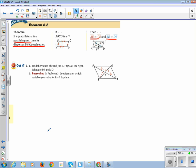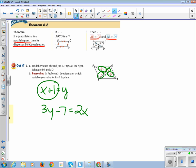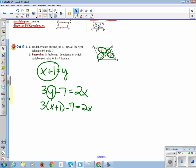Find values of X and Y in parallelogram PQRS at the right. What are PR and SQ? We know that X plus 1, this value here, is equal to Y, because the diagonals bisect each other, so it creates two equal portions. We know that 3Y minus 7 is equal to 2X. I'm going to substitute in, I'm going to take out Y, I'm going to substitute in X plus 1 here, and I'm going to solve.